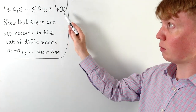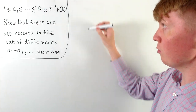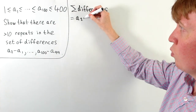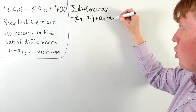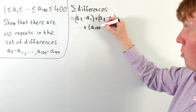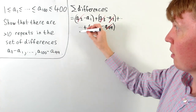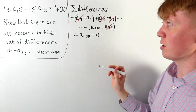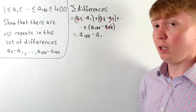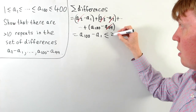There's a nice way of capturing the constraint of being between 1 and 400 by relating it to the sum of all differences between consecutive numbers. The sum has lots of cancellation: a2 minus a1 plus a3 minus a2, and so on — all intermediate terms cancel, leaving just a100 minus a1. Since a100 ≤ 400 and a1 ≥ 1, the sum of differences is at most 399.